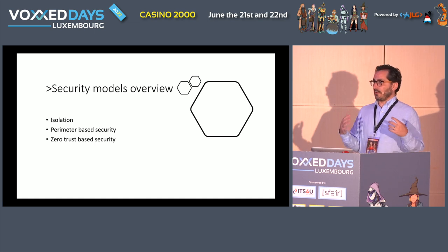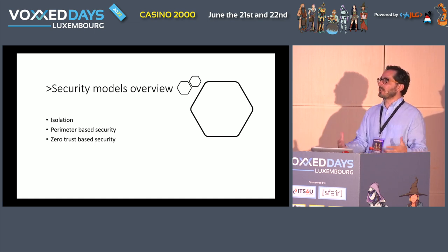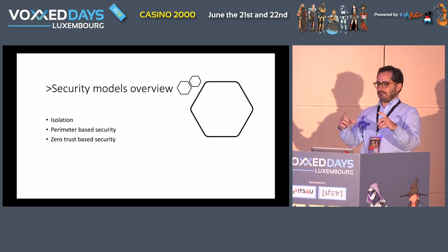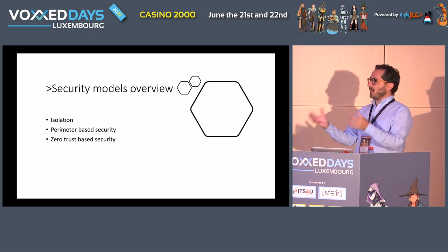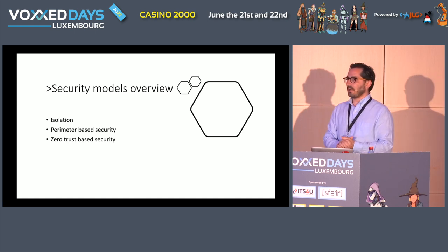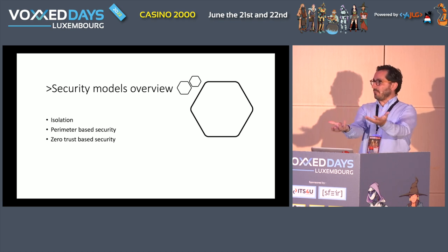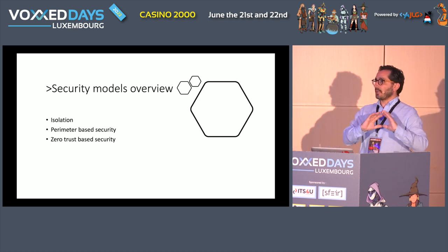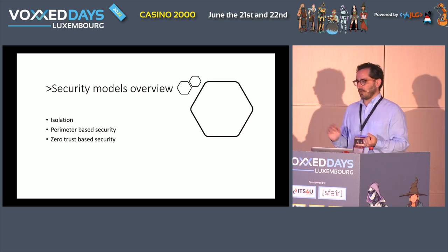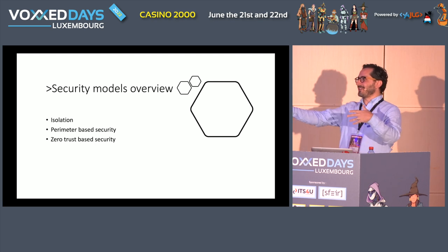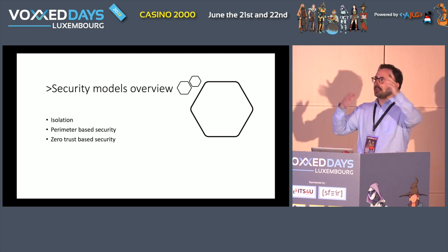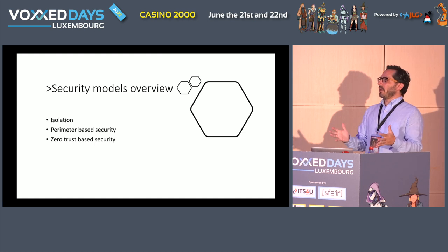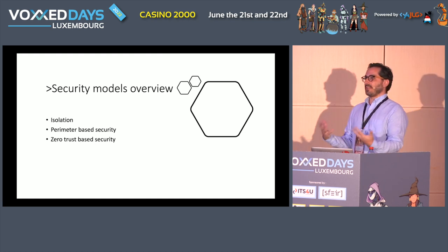Traditionally, houses have a perimeter-based security system. When someone needs to enter your house, they knock on the door and you either check who it is or you have a video camera on your ring bell. You see them and say, okay, this is the person allowed to enter. Now that person, after passing that door, can access everything in your house — your bedroom, kitchen, fridge, take a beer, play Xbox — and you never question their identity again.